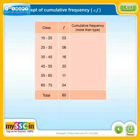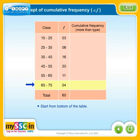Let's see the given frequency distribution table and how greater-than type cumulative frequency is calculated. To calculate greater-than type cumulative frequency, we start from the bottom of the table.